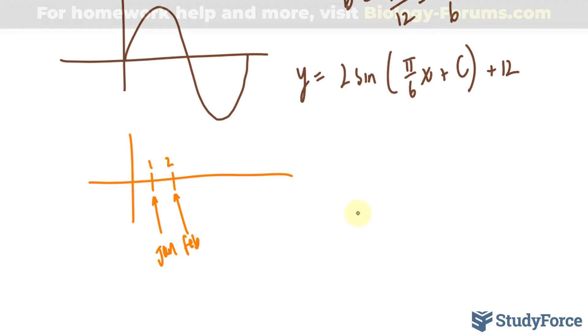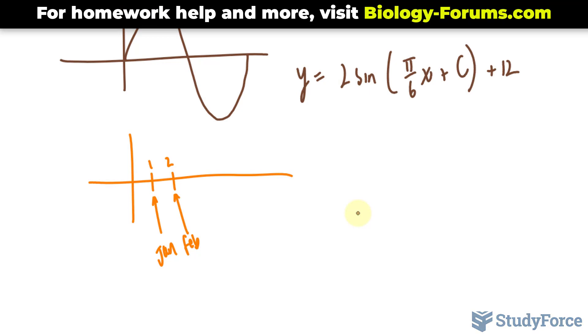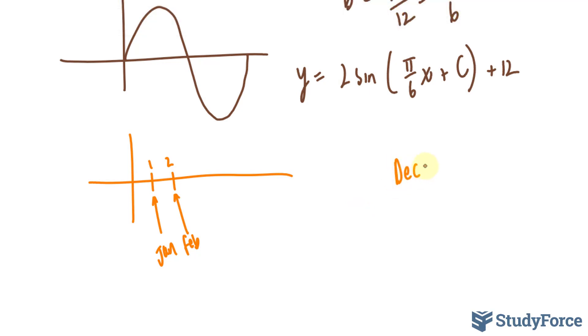So where along the x-axis does our waveform begin? To find that, we need to use the middle value. Remember, December needs to be x = 0 or you can interpret it as x = 12. January will be x = 1. Let me write this down for you.